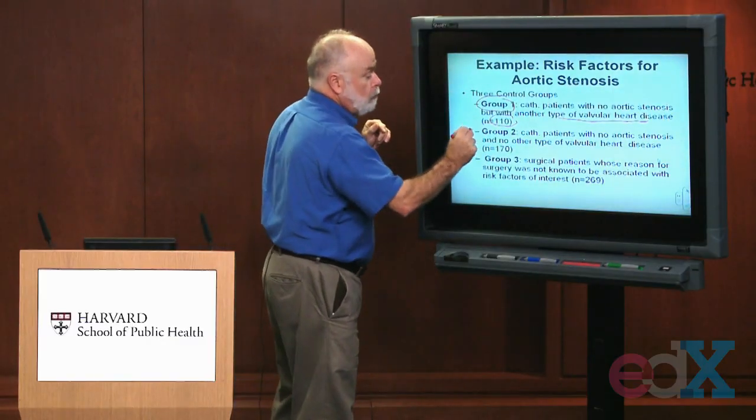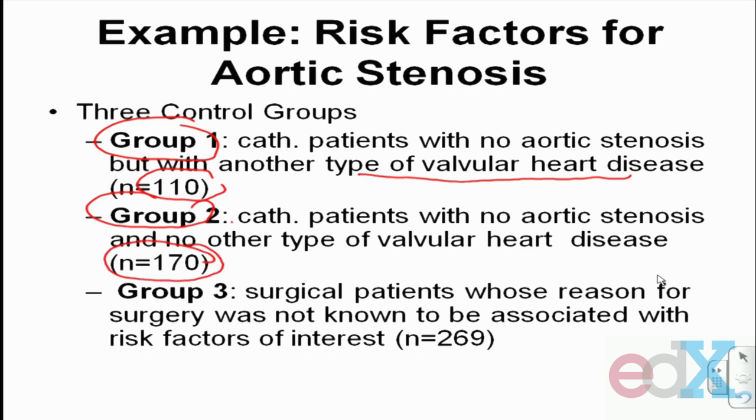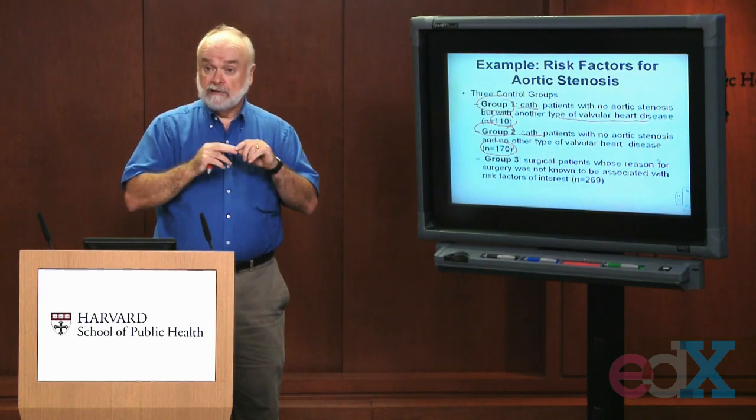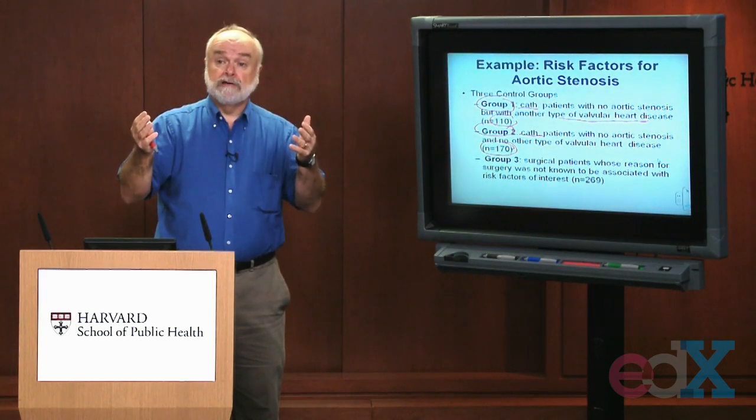Control group number two contains 170 different people. They also underwent cardiac catheterization, did not have aortic stenosis, and had no problems with any of their valves — no valve disease whatsoever, and no coronary artery disease either. So you might ask: why were these people referred for cardiac catheterization in the first place? Cardiac catheterization is not a random event — it requires a physician referral. These 170 people were referred, and the catheterization showed no disease. Are those 170 people appropriate controls to compare to the exposure histories of the 105 cases?